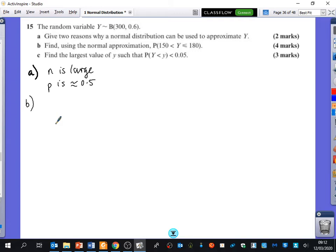Then it says find using the normal approximation the probability of these kind of things we've got. So we need to say this is our random variable here. We need to change that. So maybe we now change it to x is normally distributed. We do these two things multiplied together, which is 180. And then we do 180 multiplied by 0.4, which is 72.